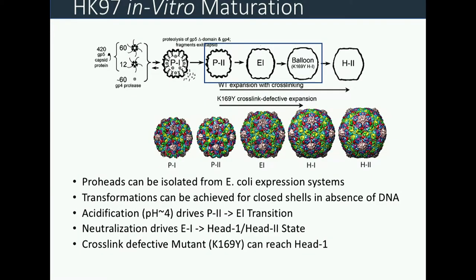The system we're looking at is bacteriophage HK97, a well-studied T-equals-7 icosahedral phage. 420 coat proteins assemble into the immature PROHEAD-1 particle. A cleavage event leads to the initial metastable PROHEAD-2 particle. In vivo, this is the stage at which DNA begins to package, driving expansion through at least one intermediate state, ultimately expanding and faceting to reach what's known as the head or mature state.